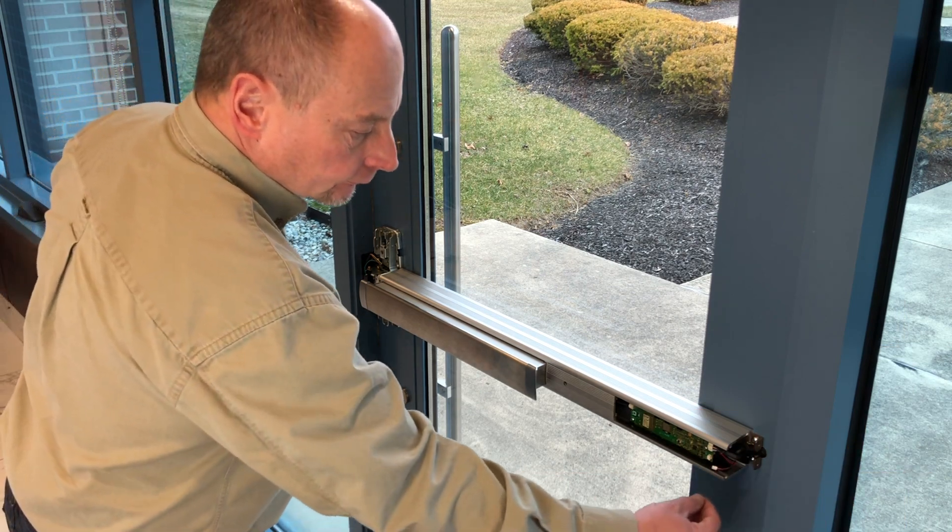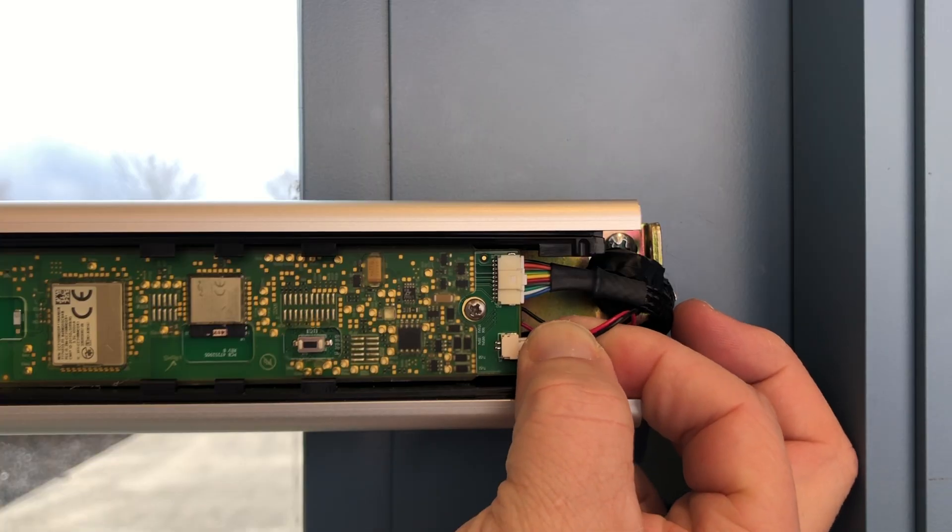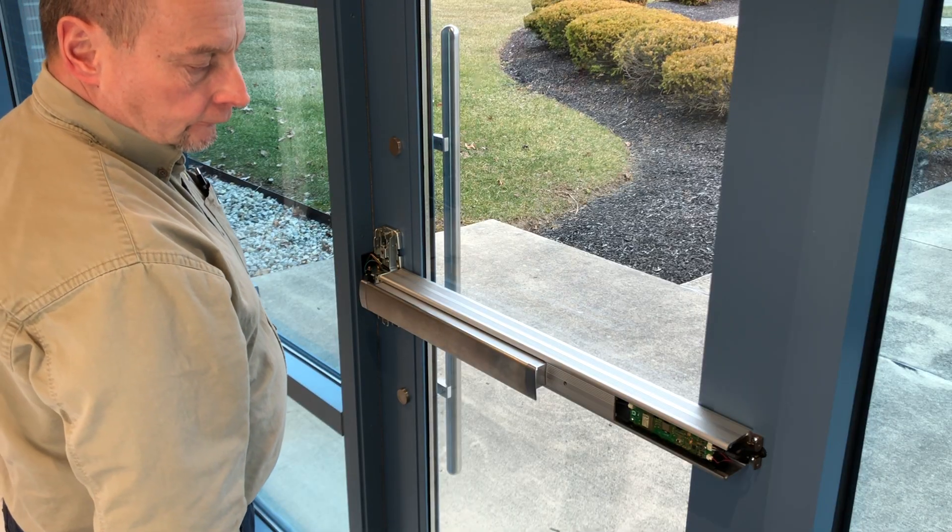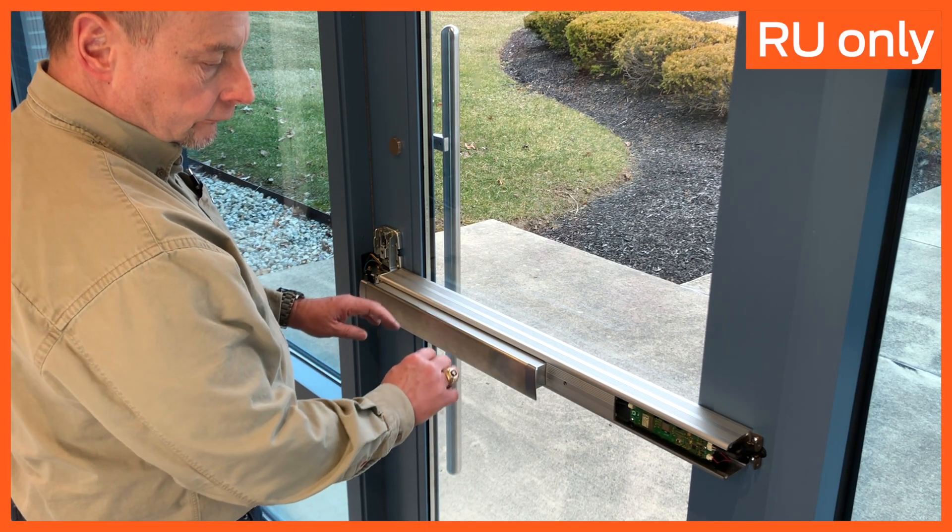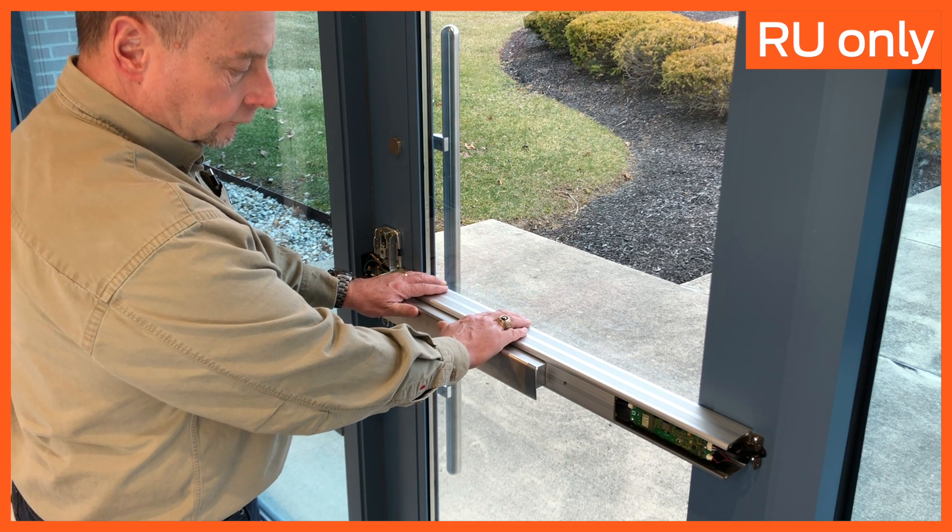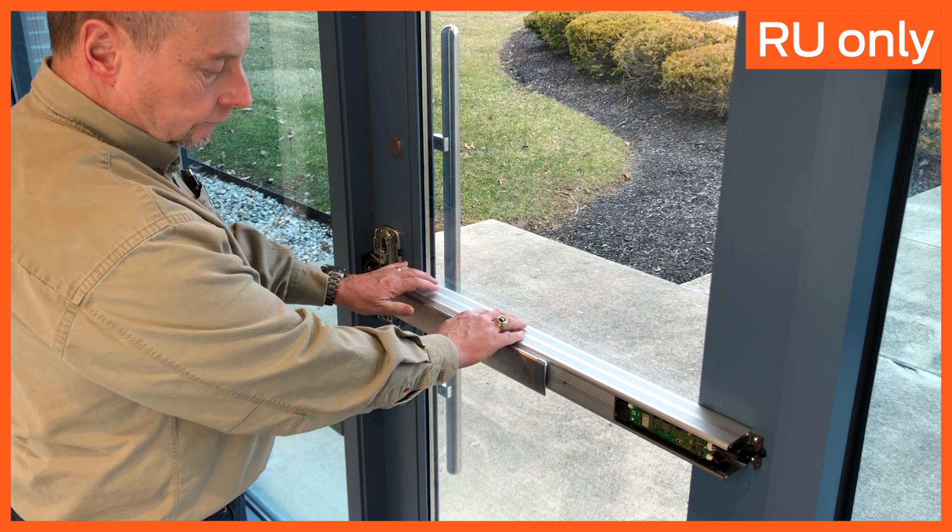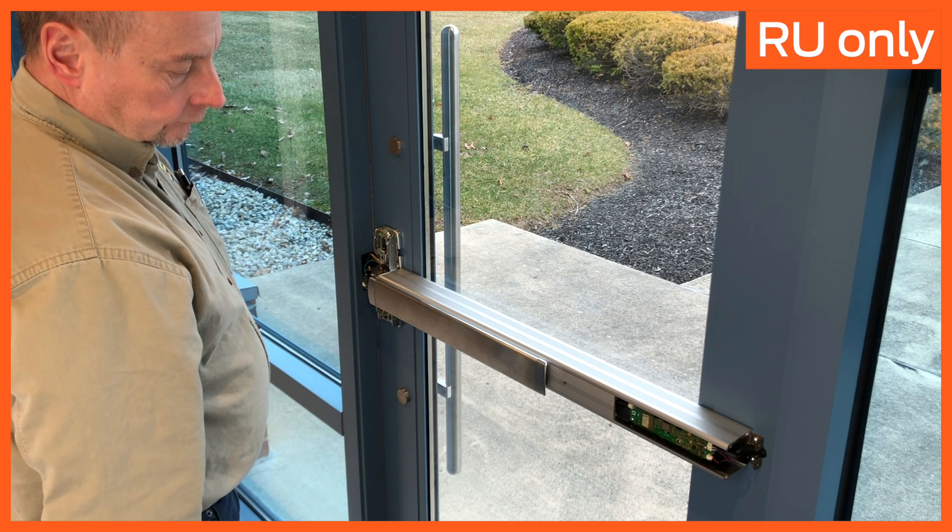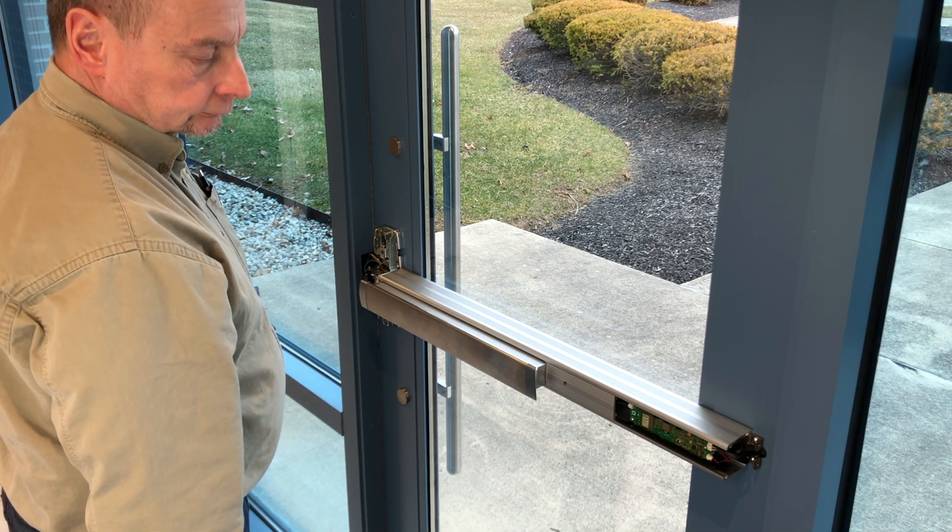Connect the battery cable to the main PCB. To test the remote undogging module, listen for a single beep during power-up. Then push the pushpad. It should stay dogged and then release when the module beeps three times.